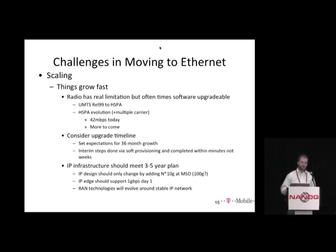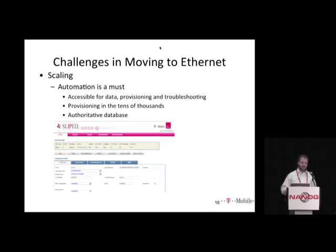Normal best practice: make sure the design meets a three-to-five year plan. You don't want to forklift things at this magnitude — we're talking millions of customers per backhaul. The last piece is scaling: if we're doing this 30,000 times, we need to automate. Have an authoritative database that says how services are provisioned — VLAN ID, CIR, PDV, delay exceptions — and ensure consistent deployment across all providers, with one place to understand where providers are unique.